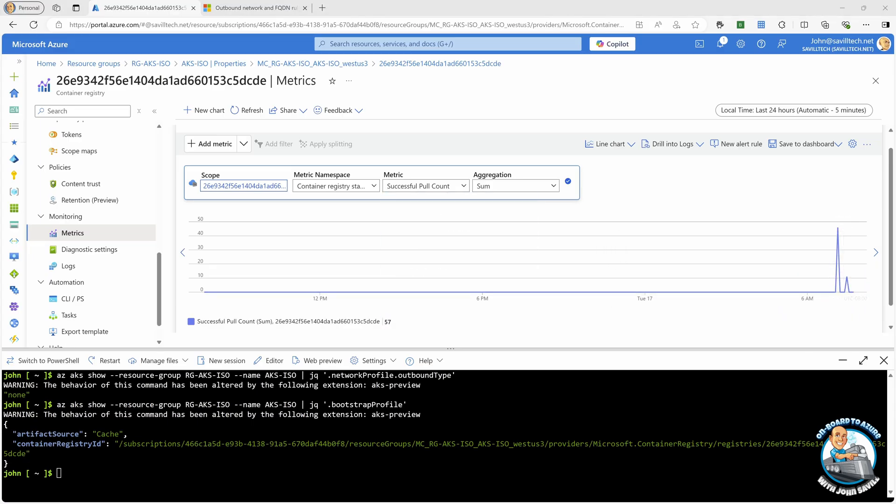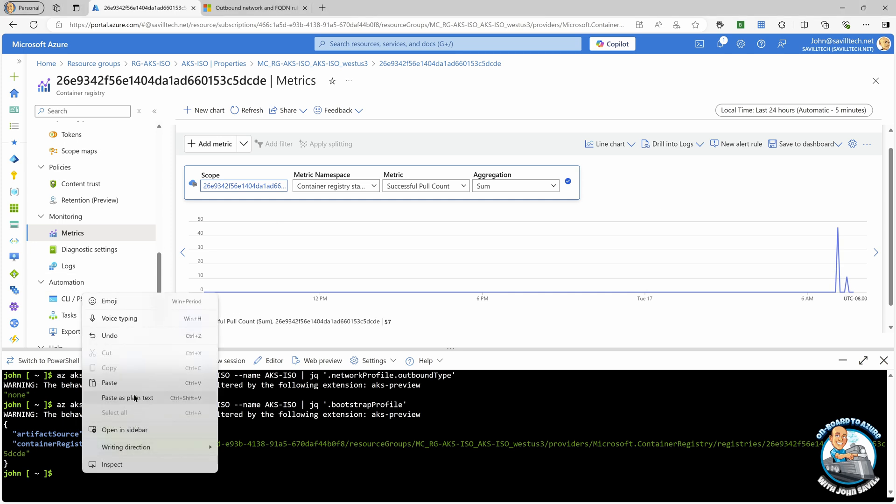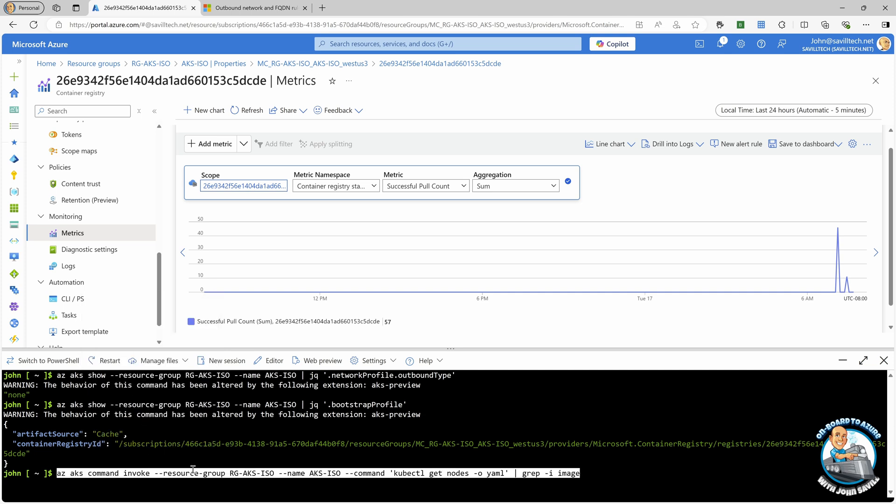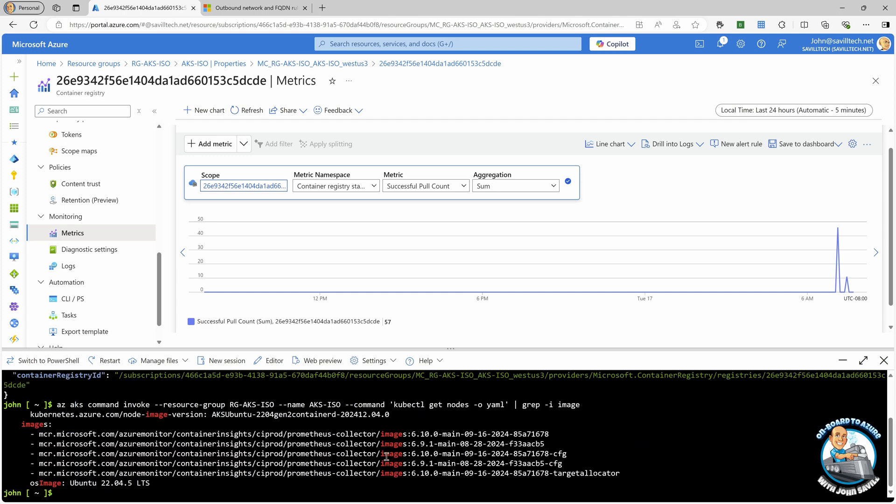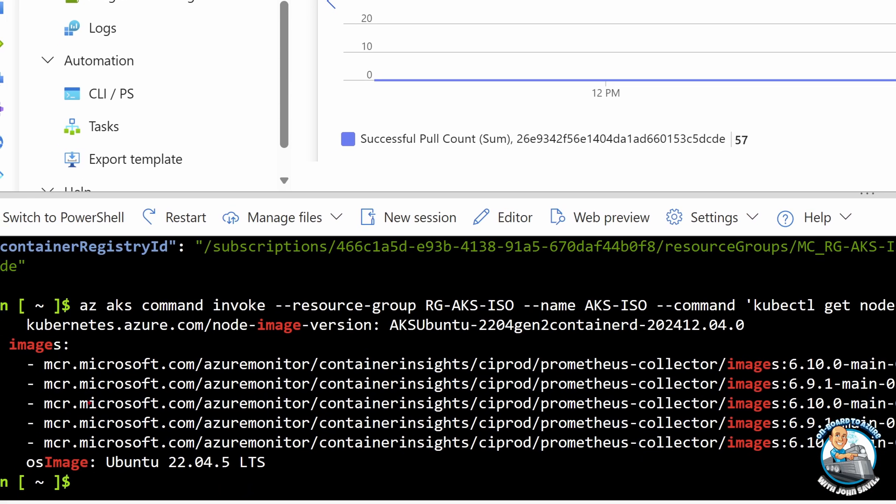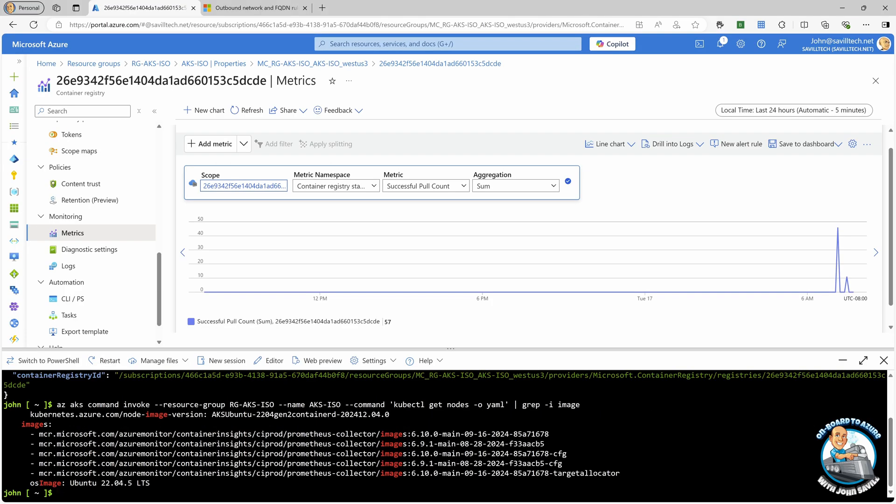If I actually looked at the node itself, it still thinks it's talking to the Microsoft container registry. So if I'm using AZ AKS command invoke, it's a private cluster, so I can't just use the regular commands, but this will actually run it by the API server. Here, I'm looking at the nodes, I'm just going to do a quick search for some of the images that it may have available to me there. I can see in terms of the images that they're all sourced from still the MCR.microsoft.com. They came via the Azure Container Registry. But it's kind of invisible to nodes, it went to its intent because it's using caching. It went and pulled those through.